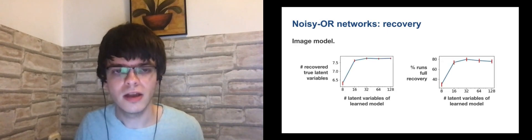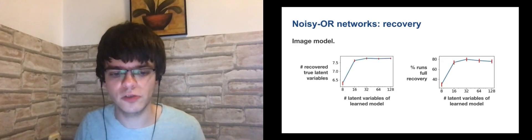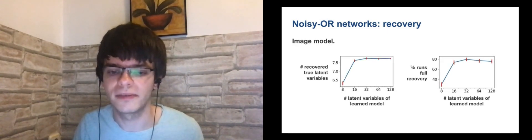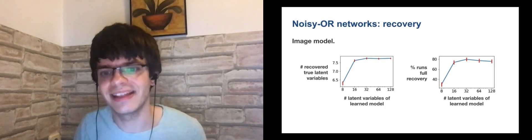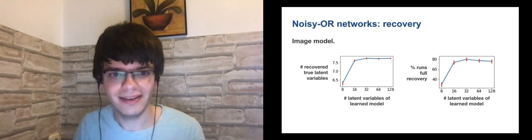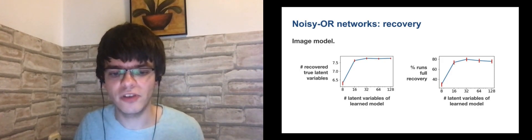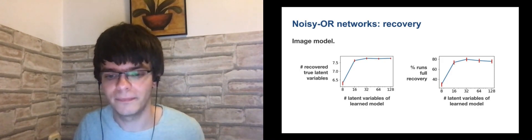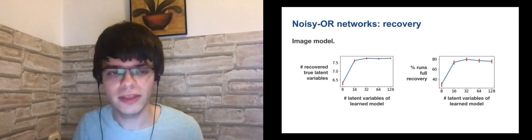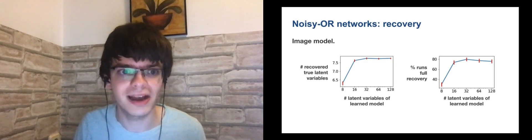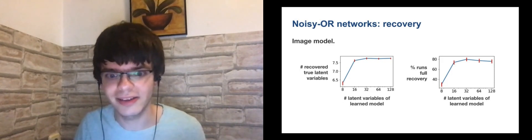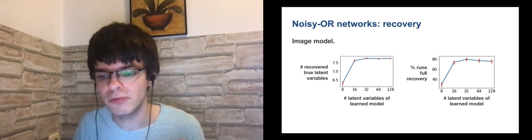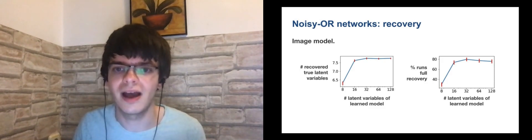For each of our experiments, we learn a noisy OR network and count how many ground truth latent variables were recovered. On this slide, we show the results for the image model. Recall that the ground truth has eight latent variables. On the x-axis, we show the number of latent variables of the learned model. In the left graph, the y-axis shows how many true latent variables are recovered, and in the right graph, the y-axis shows the percentage of runs in which all true latent variables are recovered.